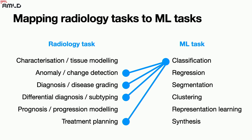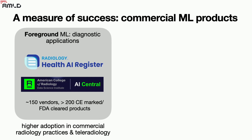If you have this mapping in mind, you know how to deal with radiology as an engineer. A measure of success is that there have been many commercial machine learning products — algorithms that make it through CE marking or FDA approval. There are about 150 vendors, many small startups but also big players like GE, Philips, and Siemens. For fracture detection alone, there are now three CE-marked algorithms, all from French companies. Adoption is higher in commercial practice and teleradiology; in academic centers, these diagnostic tools are less commonly used.